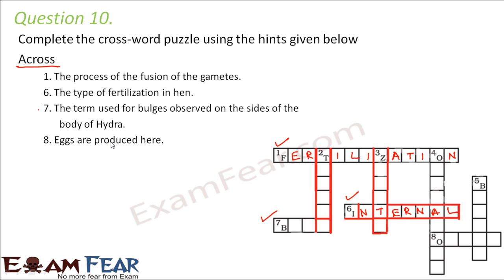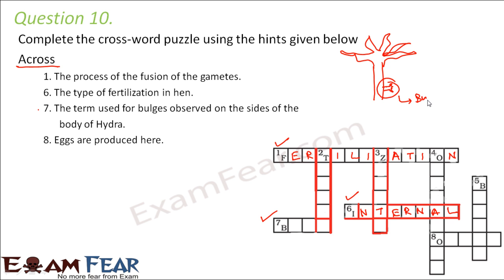Number seven across: the term used for bulges observed on the sides of the body of hydra. Looking at hydra with its tentacles, the small outgrowths on the sides of its body are nothing but buds. So the answer is buds — this is the mode of asexual reproduction in hydra.